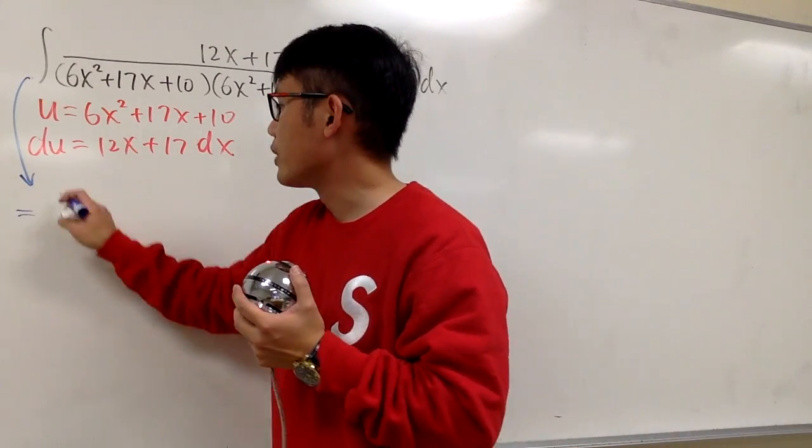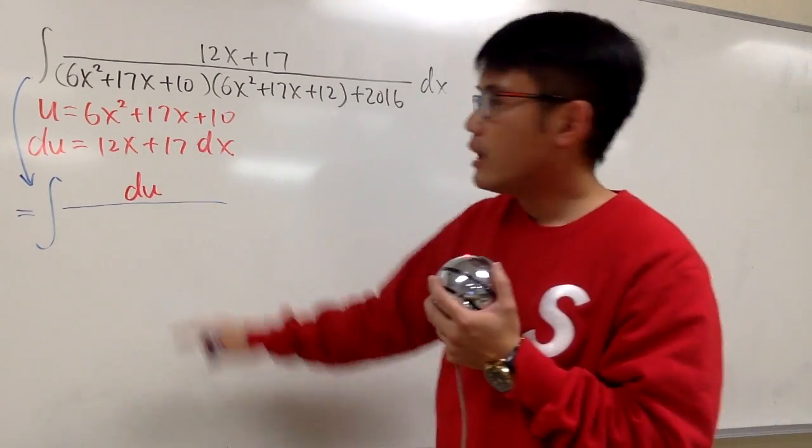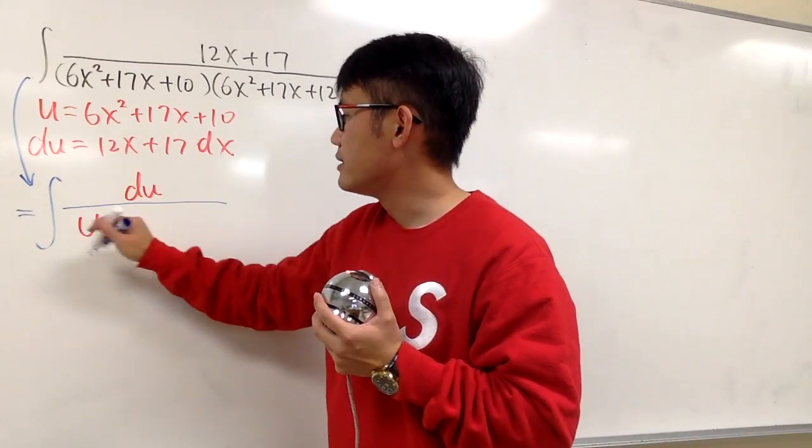This is what you will get. On the top, this and that together is exactly the du, so then we can write down du. We have the du right here. The first parenthesis is exactly the du, so I'm ready to start. This is the du.